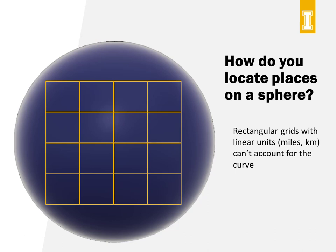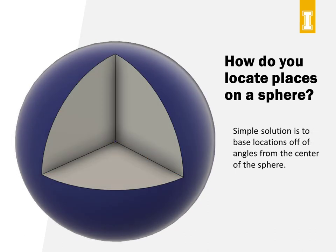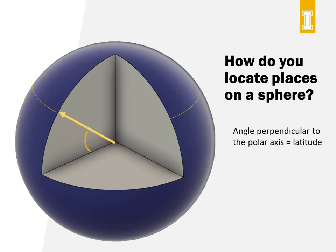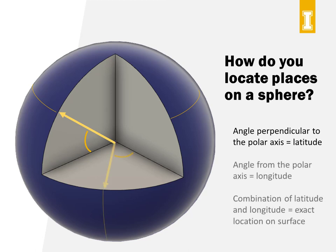A grid will either poke up at the edges or we'll have to stretch it to get it to fit, and neither of those are very good features. A simple and pretty elegant solution is to use angles instead of linear units to locate things on our planet. If we start at the center of Racquetball World, we can define the angle up or down looking at the sphere from the side — we'll call this latitude. Then we can define the angle clockwise or counterclockwise looking from the top — we'll call this longitude. The combination of a latitude and a longitude angle gives us a unique coordinate for any place on Racquetball World.